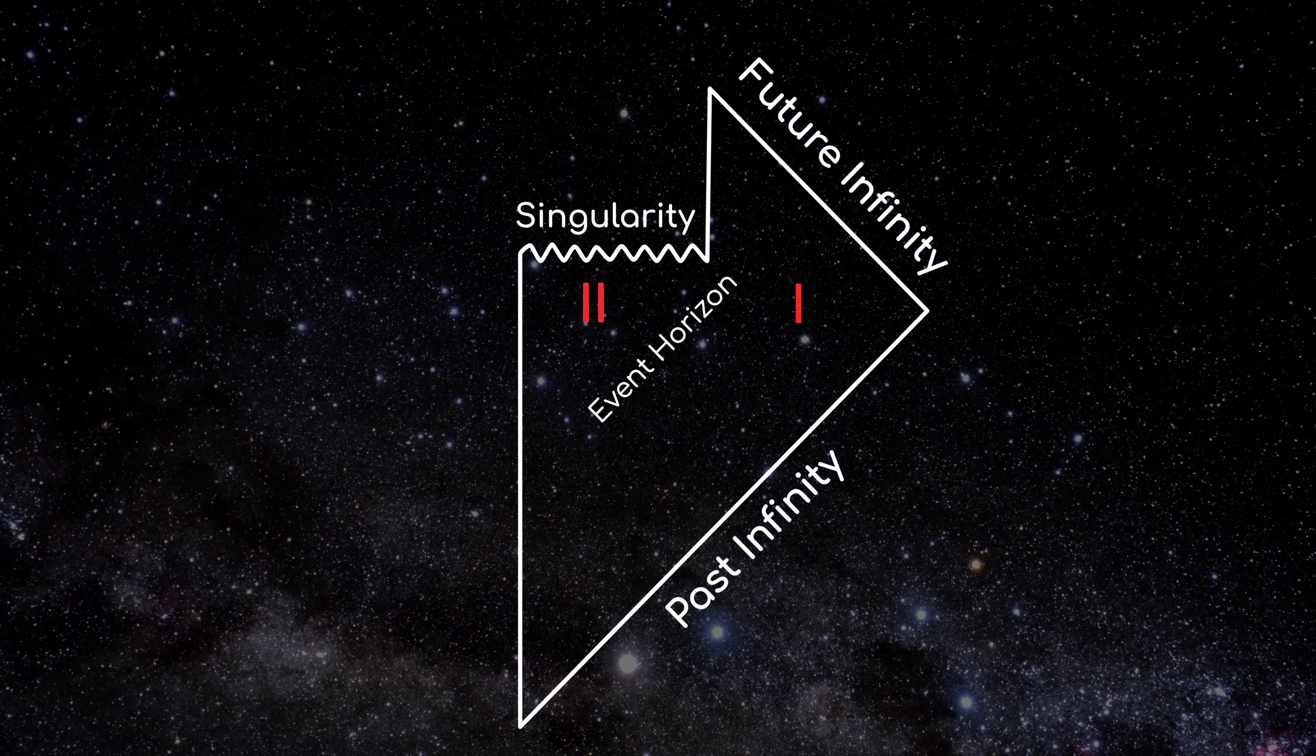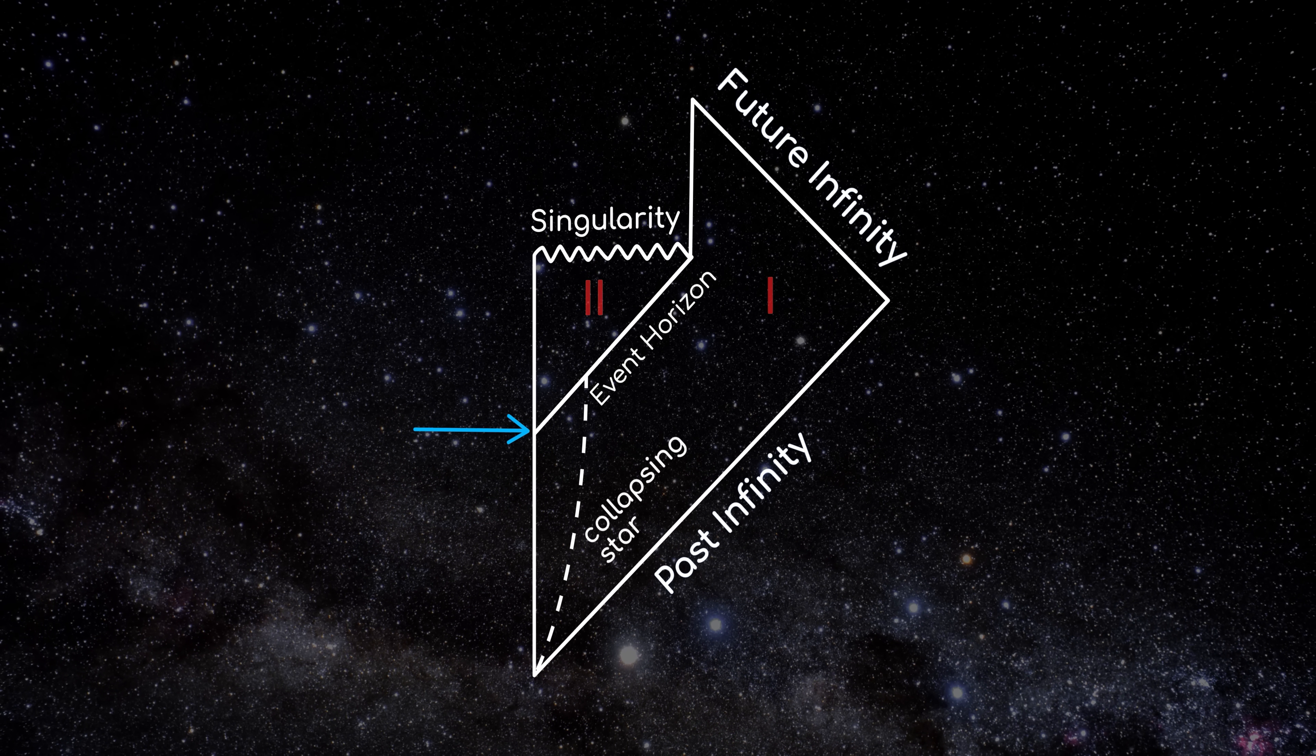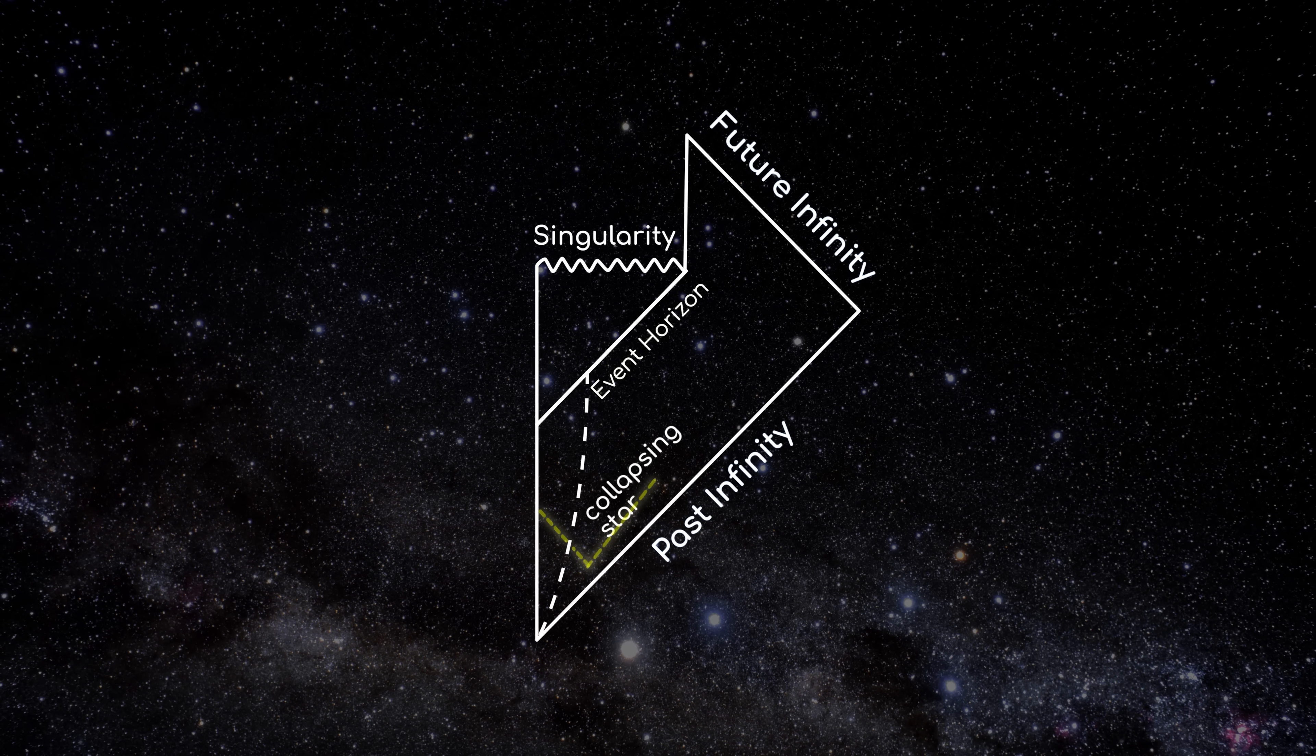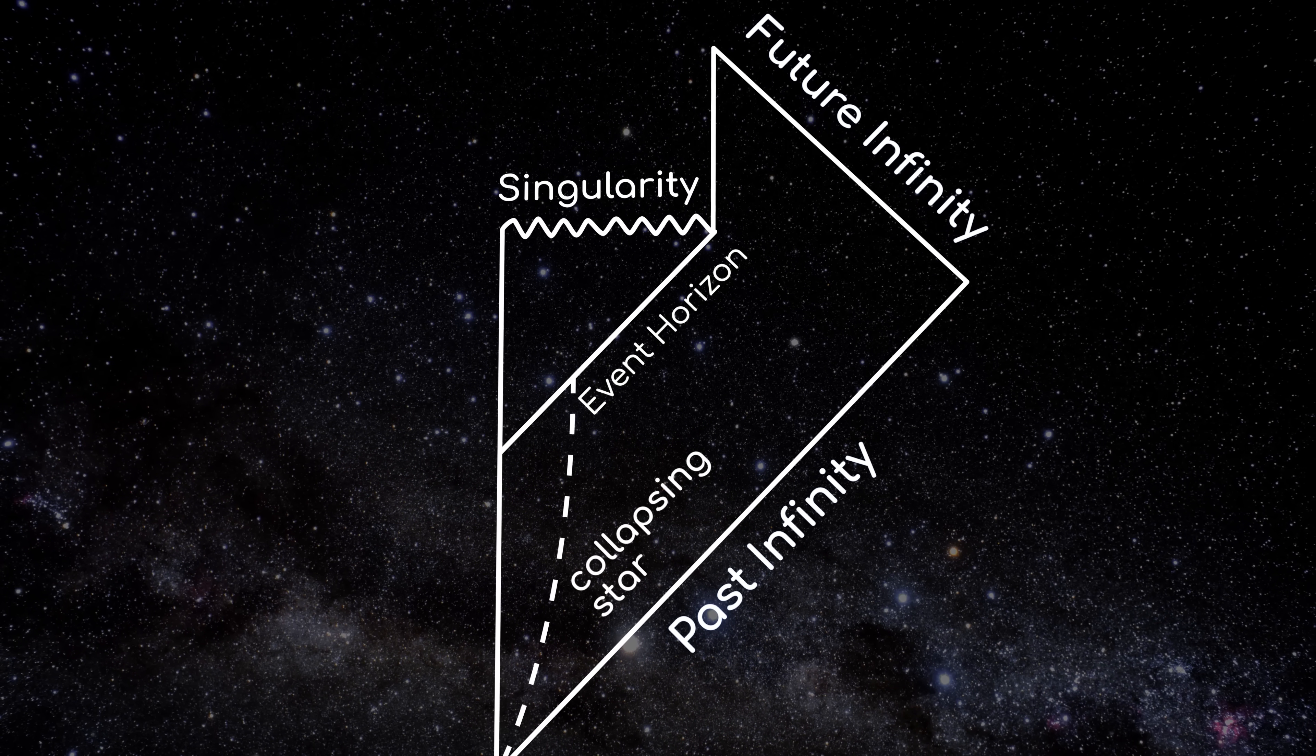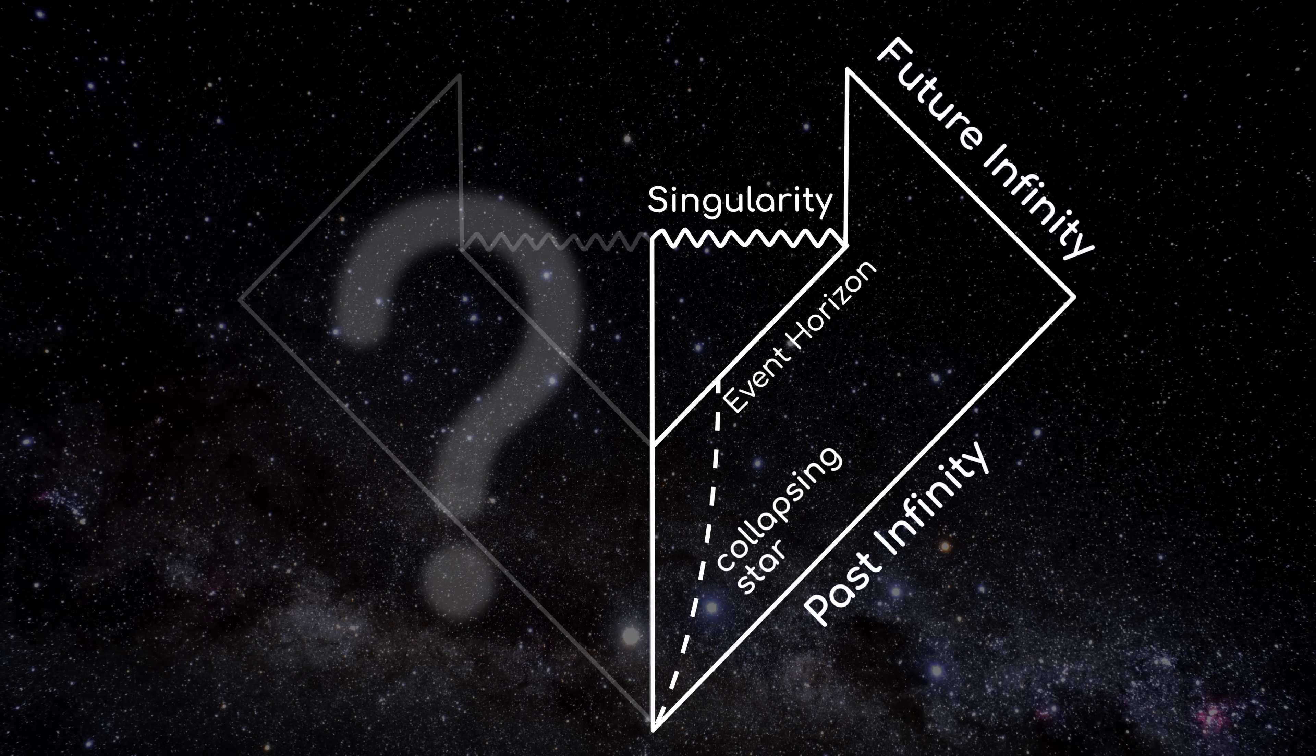So what's so special about this Penrose Diagram is that it accounts for the formation of the black hole at some specific point in time, when the star collapsed in on itself. In the far past, there was no event horizon or black hole to speak of, and light could travel freely across all of space. But while this diagram represents the kind of black hole we're used to seeing in the real world, it's only one piece of the full mathematical description of black holes in general relativity. In other words, it is the lone ice cream cone of black hole diagrams.